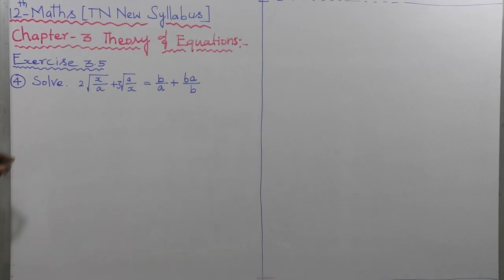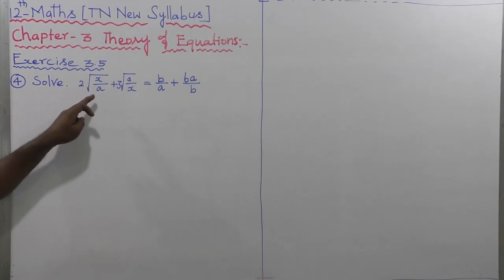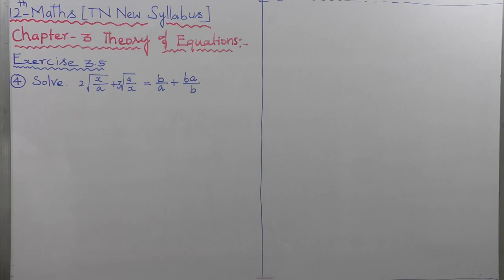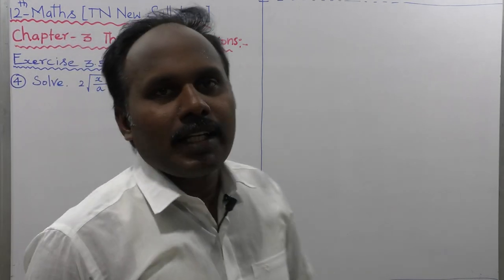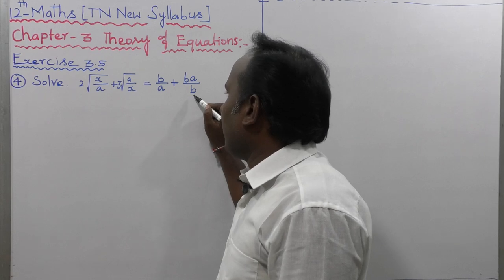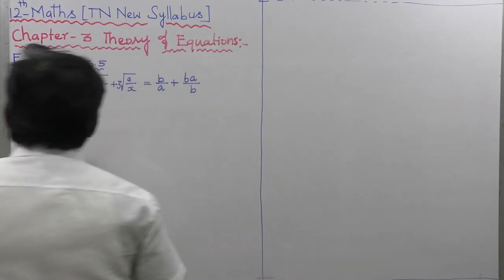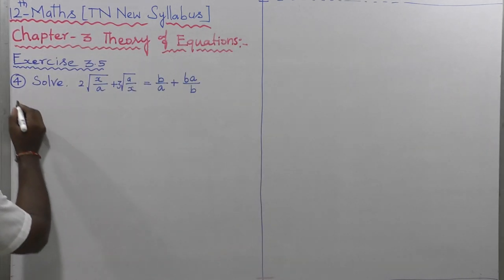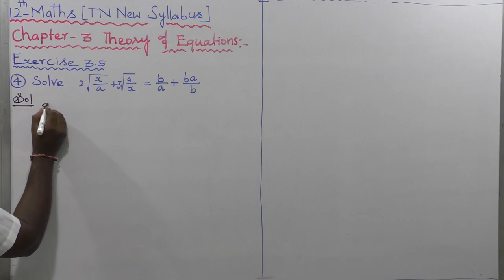X is 3.5, fourth sum. Solve: 2 into root of X by A plus 3 into root of A by X, that is equal to B by A plus 6A divided by B. That is the given equation. First one, solve equations.